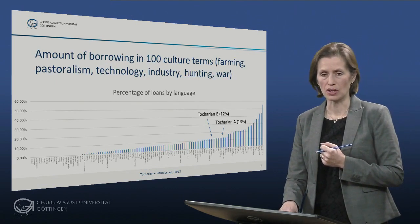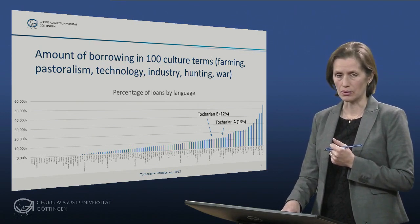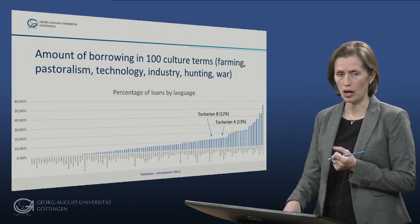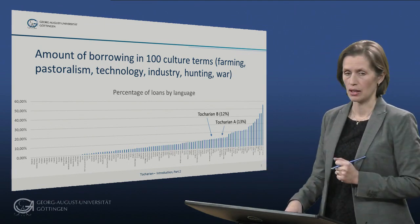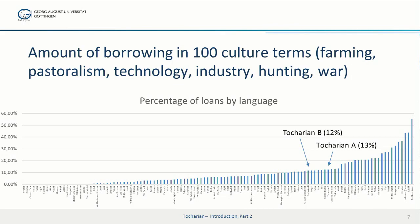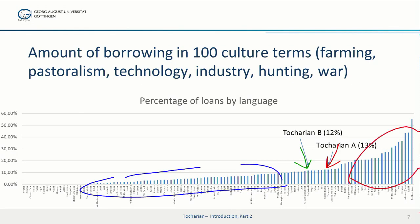Large parts of Tocharian vocabulary are obscure. However, if we consider the vocabulary for farming, pastoralism, technology, industry, hunting, and war, we notice that Tocharian B has 12% loans and Tocharian A has 13%. This is relatively low. There are languages with fewer loans, but also languages with many more. So Tocharian is not a high borrower — it is not a language that borrows very many culture words.